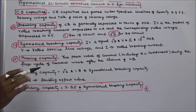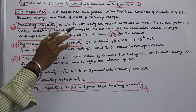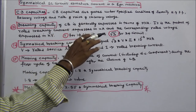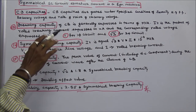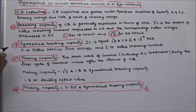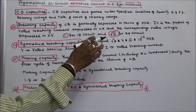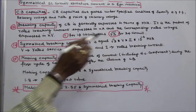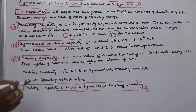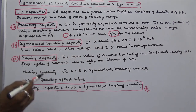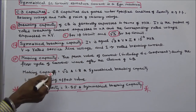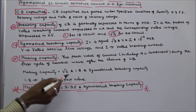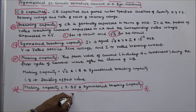The thirteenth term is breaking capacity: it is generally expressed in terms of MVA, equal to the product of rated breaking current in kA and the corresponding rated voltage in kV — multiplied by 1 for single-phase and by root 3 for three-phase circuits. The fourteenth term is symmetrical breaking capacity, equal to root 3 × V × I × 10⁻⁶ MVA, where V is the rated service line voltage and I is the rated breaking current. The fifteenth term is making capacity: it is the peak value of current including the DC component during the first cycle after circuit breaker closure. Making capacity equals root 2 × 1.8 × symmetrical breaking capacity, where 1.8 is the doubling effect value. Therefore, making capacity equals 2.55 × symmetrical breaking capacity.